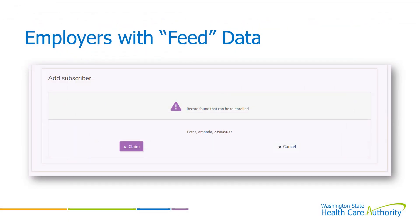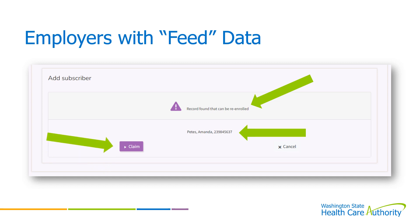I want to share something for BAs from state agency employers, community and technical college employers, and any other employers whose employee demographics information is first entered into your own system and then feeds into Benefits 24/7. Once you go into Benefits 24/7 to add a new subscriber and key their social security number and date of eligibility, you will come to a screen where you get a 'record found' message. This means the system is recognizing that employee's social security number and will give you the employee's name so you can verify you have the correct employee. Then all you need to do is click the Claim button, and the system will automatically populate that data into Benefits 24/7.